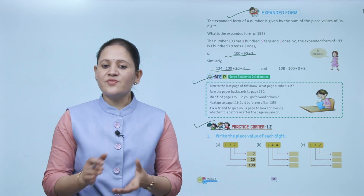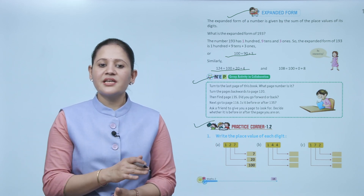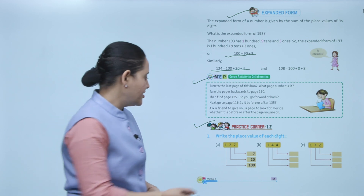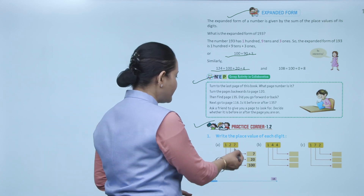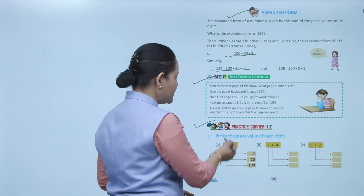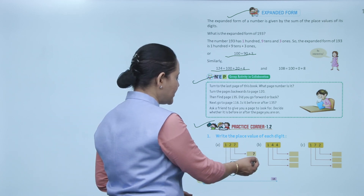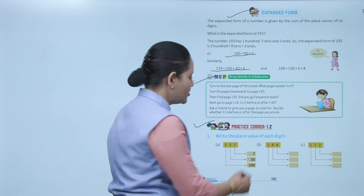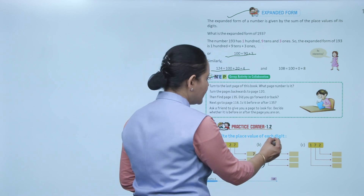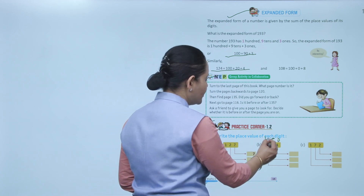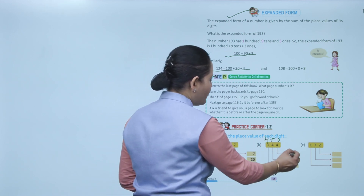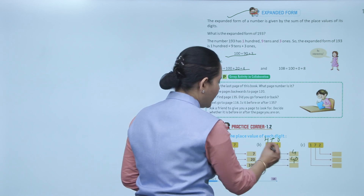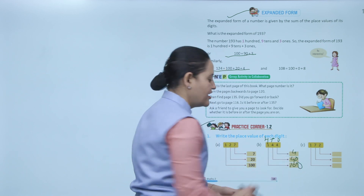Next: Practice Corner 1.2. Write the place value of each digit. First number is 127: place value of 7 is 7, place value of 2 (tens place) is 20, place value of 1 (hundreds place) is 100. Similarly, place value of 4 is 4, the tens digit is 40, and hundreds digit is 100.